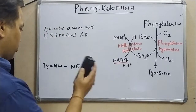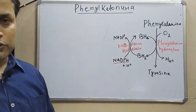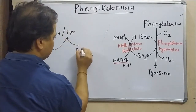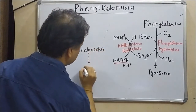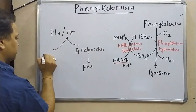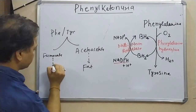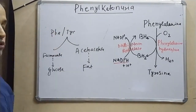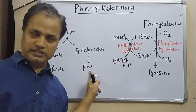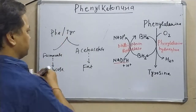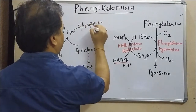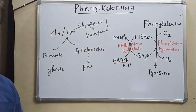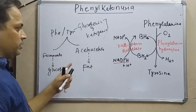Looking at the metabolic processes of both phenylalanine and tyrosine, they yield acetoacetate, which ultimately gives us fat synthesis, and fumarate, which can be converted to glucose through gluconeogenesis. This means both phenylalanine and tyrosine are both glucogenic and ketogenic amino acids — they give you both glucose and ketone bodies. We will discuss the tyrosine metabolic pathway further to see how acetoacetate and fumarate are produced.